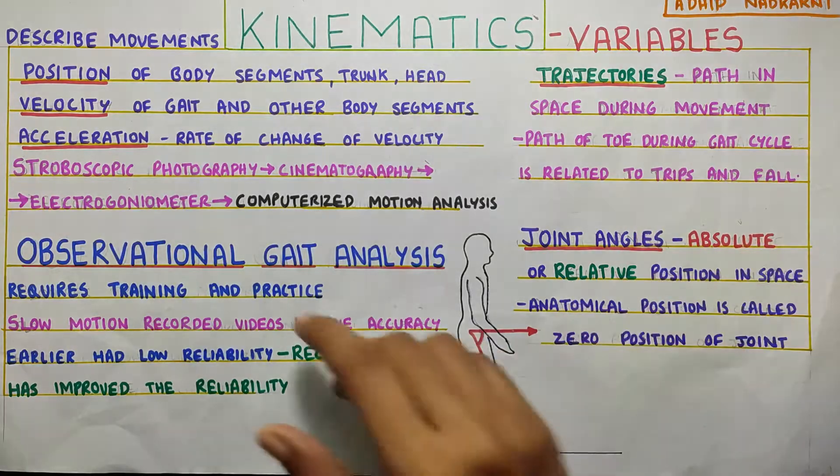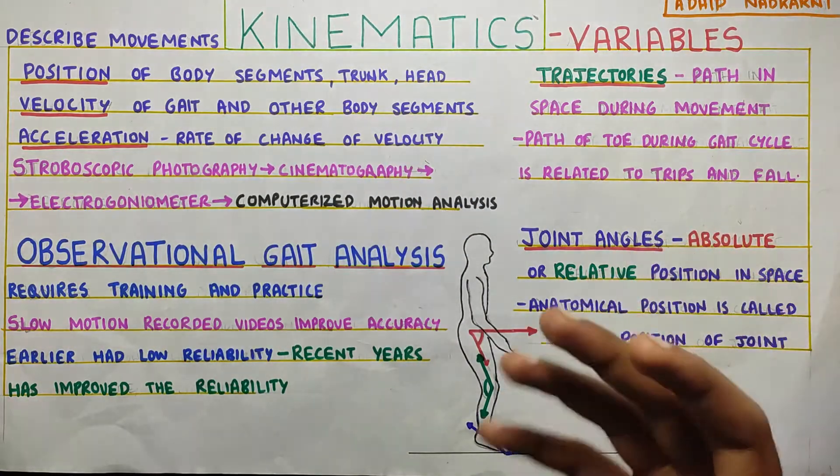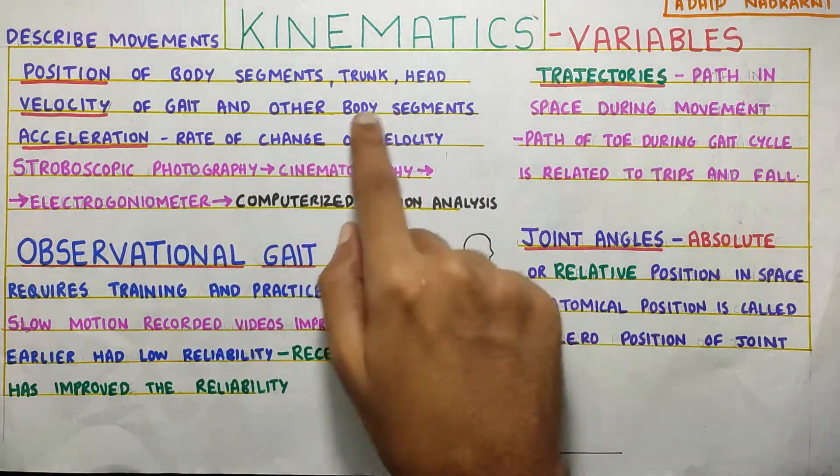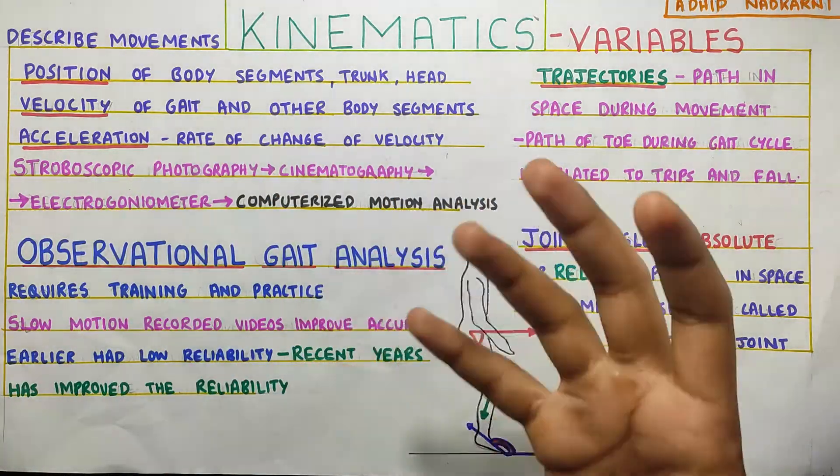Apart from that, it will also be the velocity of the movement - velocity of the gait, at what speed the person is walking. And then how the speed is changing. That is rate of change of velocity. That is your acceleration while walking.